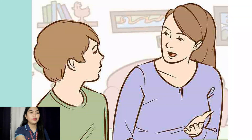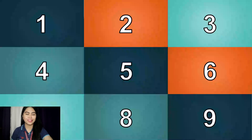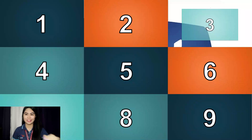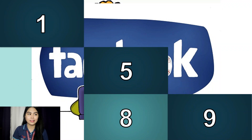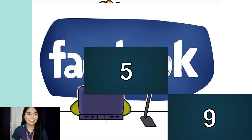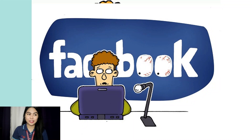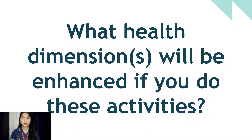That's right, they're talking. This boy is talking to his mom. Next — what do you see? Using social media, or surfing the internet. So the activities are: reading a book, talking to your parents, and using social media or surfing the internet. What health dimensions will be enhanced if you do these activities?